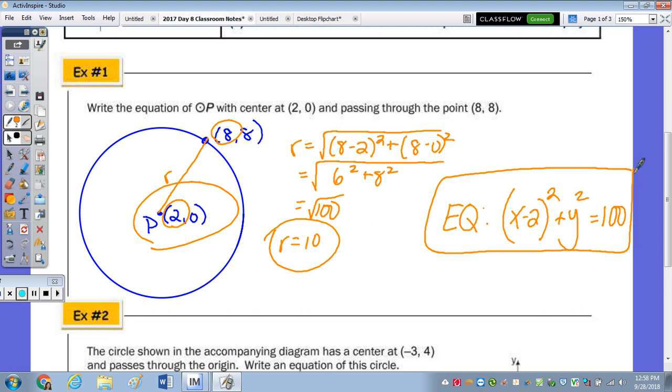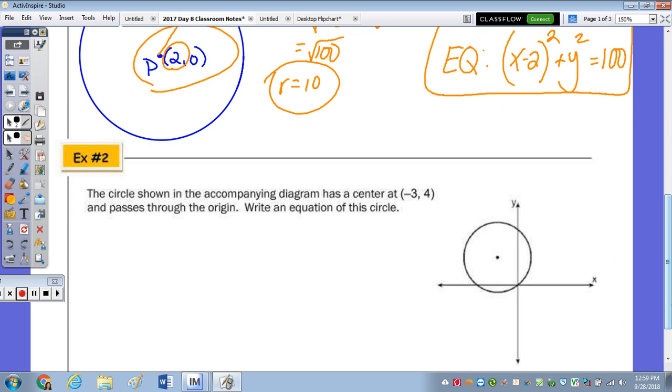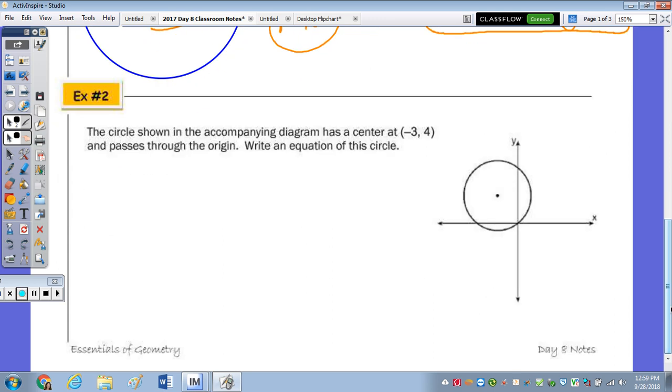Go ahead and draw your picture, or label number 2. Number 2, so we have a circle drawn. The center, it states, is negative 3, 4, and it passes through the origin. Write an equation of this circle. So it passes through the origin. That's our point on the circle. And the center is negative 3, 4. Now I want to show you another method, rather than using the distance formula, because we have a picture of it, even though we did give ourselves a picture before.